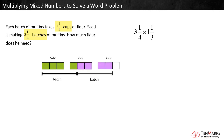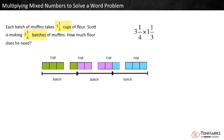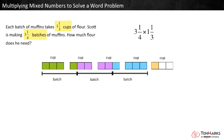Shade four more thirds in purple to show another group of four-thirds. And here is a third group of four-thirds. Another batch would be four more thirds, but Scott's only making a fourth of it. We know that each third is one-fourth of four-thirds, so we only need to shade one more third. How many cups did he use in all?